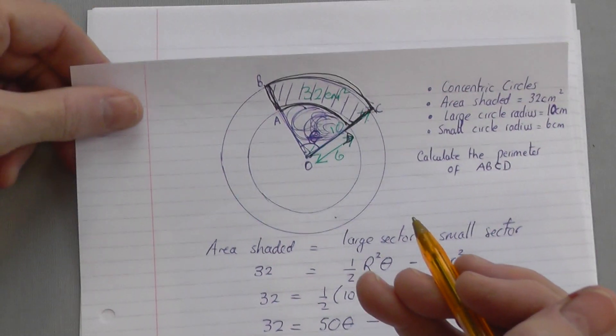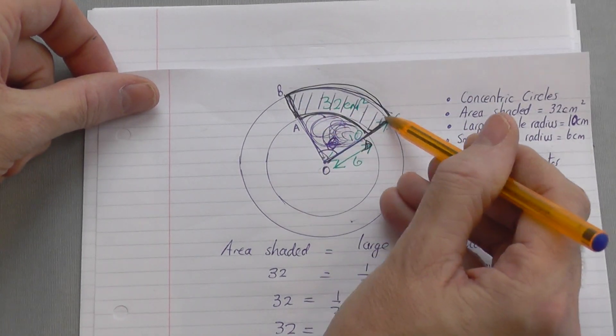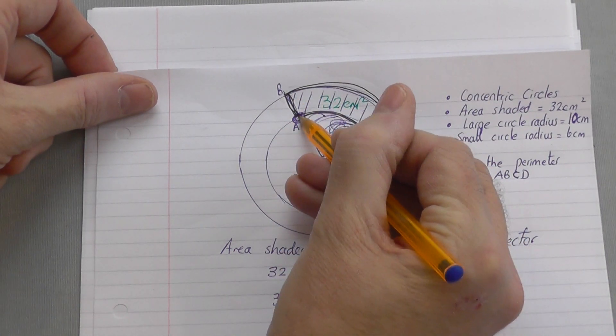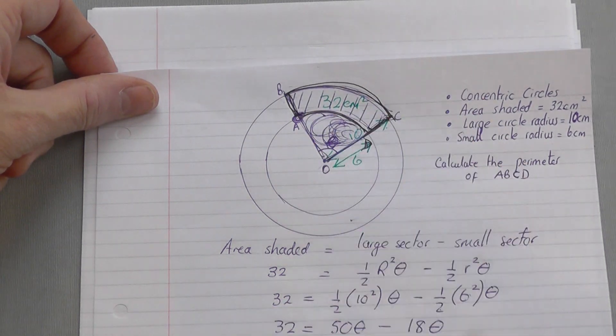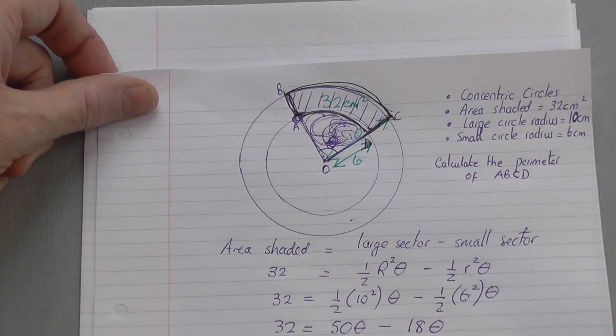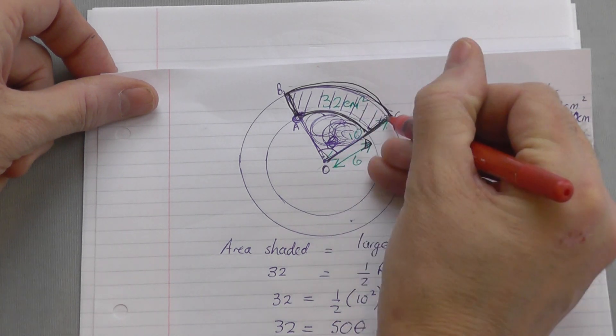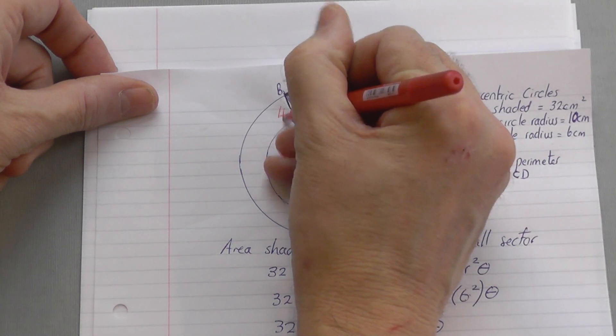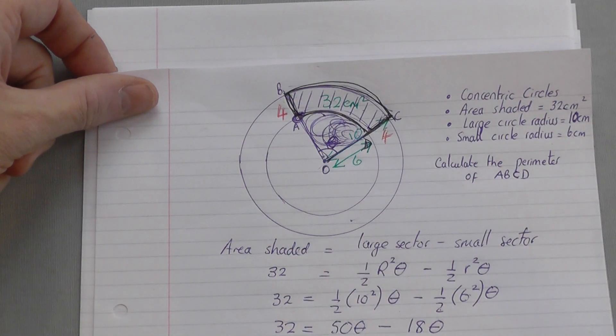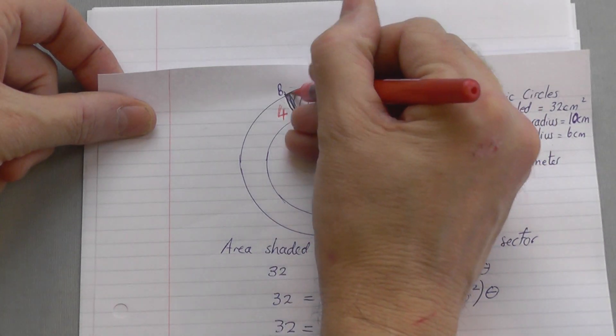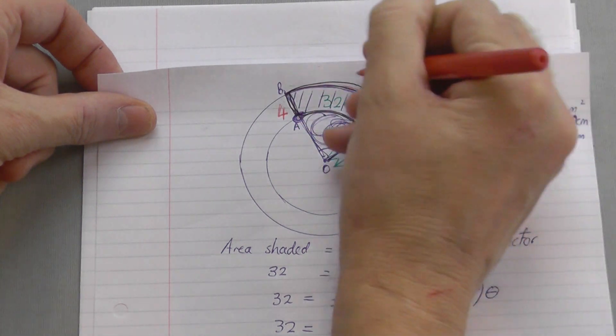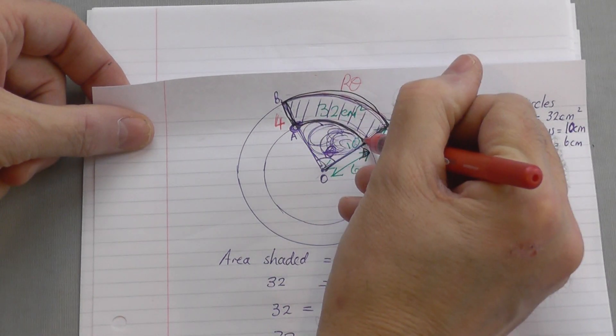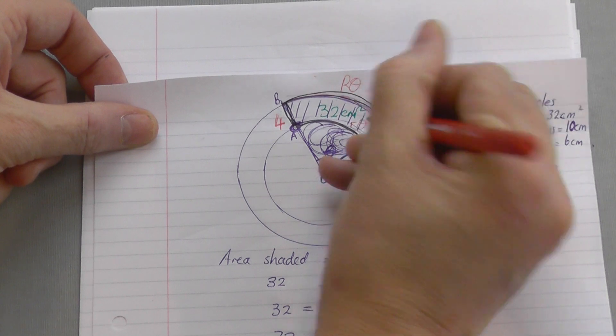The perimeter of this shape is made up of 4 different sides. I need that straight side, then that curve, then that straight side, then that curve. The two straight sides are very easy. From there to there is 10, from there to there is 6, so that small straight bit there must be 4, and that small straight bit there must be 4. And that arc is the length of the arc of the big sector, r theta. And that arc is the length of the arc of the small sector, little r theta.